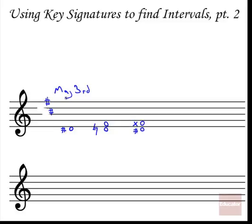One more example in minor: finding a minor sixth above G flat. Make the G flat a G natural and use G minor, which has two flats — B flat and E flat. The sixth above G is E, which becomes E flat per the key signature. Now lower both notes by a half step: G becomes G flat, and E flat becomes E double flat. So a minor sixth above G flat is E double flat.